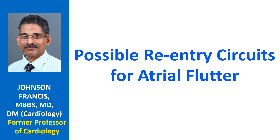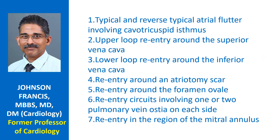Here are some of the possible reentry circuits in atrial flutter: 1. Typical and reverse typical atrial flutter involving the cavo tricuspid isthmus. 2. Upper loop reentry around the superior vena cava. 3. Lower loop reentry around the inferior vena cava. 4. Reentry around an atriotomy scar. 5. Reentry around the foramen ovale. 6. Reentry circuits involving one or two pulmonary vein ostia on each side.